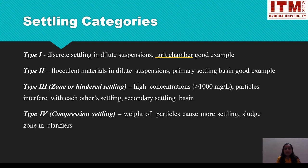Type 1 settling is discrete settling in dilute suspension — the grit chamber is a good example. Particles in this category do not settle easily and remain on the upper side of the grit chamber. Type 2 is flocculant settling in dilute suspension, with the primary settling basin as a good example. Here, particles may not settle individually, but when they come together they gain a tendency to move downward and eventually settle.